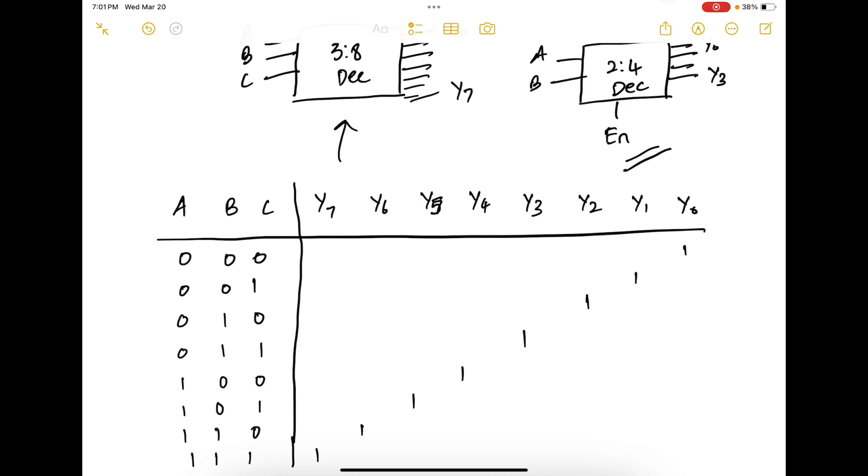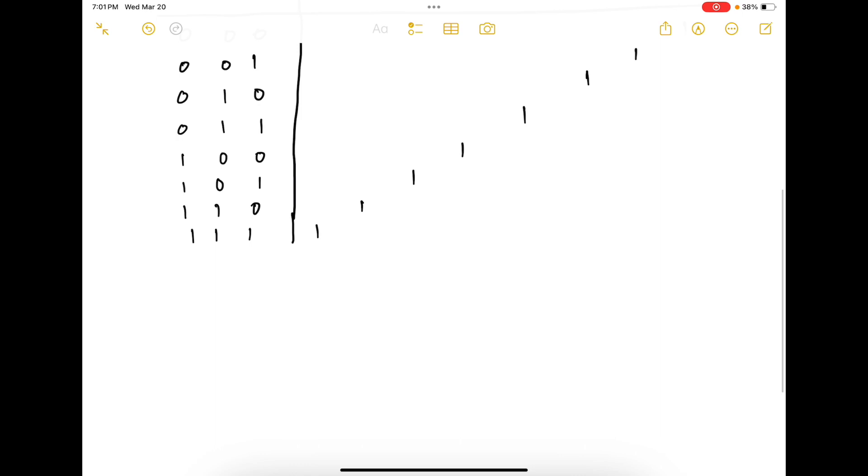Next, draw the truth table for the 2-to-4 decoder with the enable input. So 2-to-4 will be as follows: A, B, enable. You have Y3, Y2, Y1, Y0.